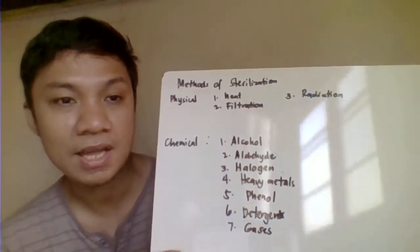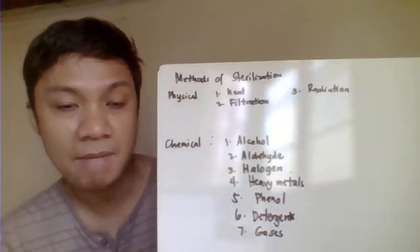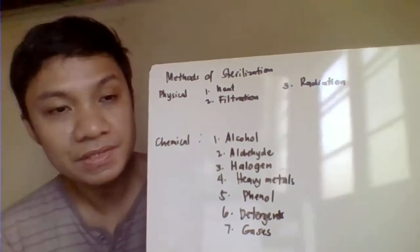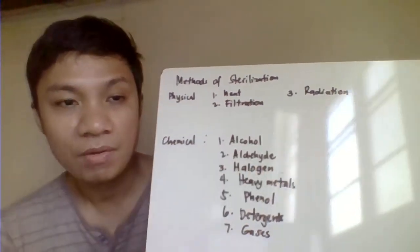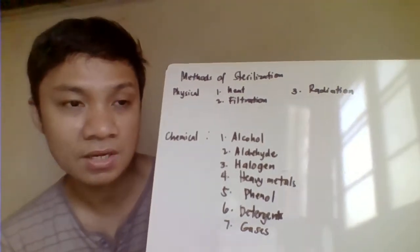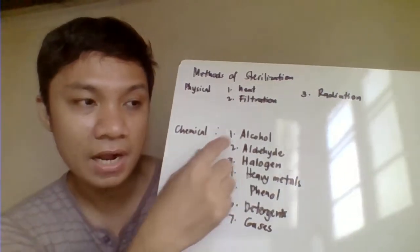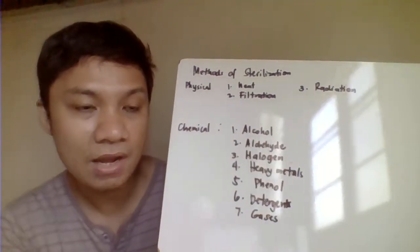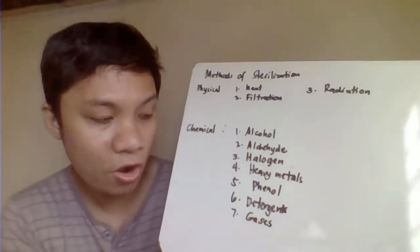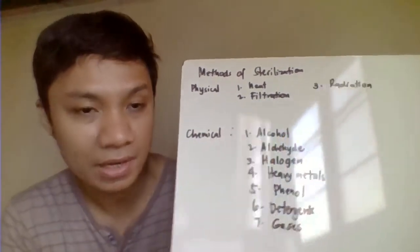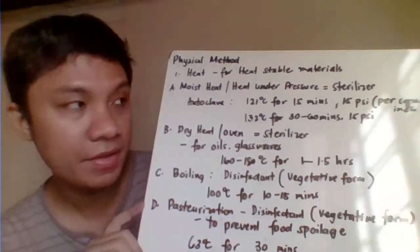Methods of disinfection and sterilization can be physical or chemical. Physical methods include application of heat, filtration, and radiation. Chemical methods include the use of alcohol, aldehydes, halogens, heavy metals, phenol, detergents, and gases.